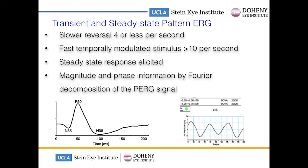Now when you have a fast temporally modulated stimulus of greater than 10 per second, that then elicits a steady-state pattern ERG. And that's what you can see on the bottom right part of the slide.